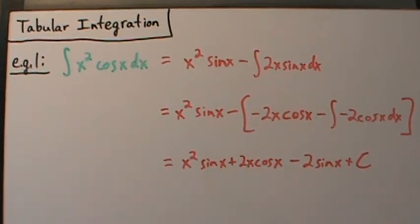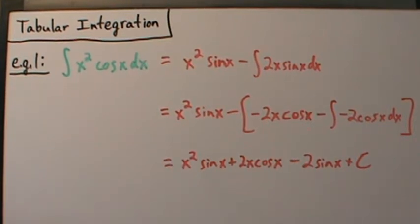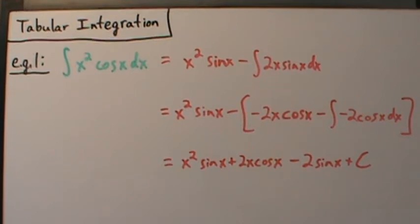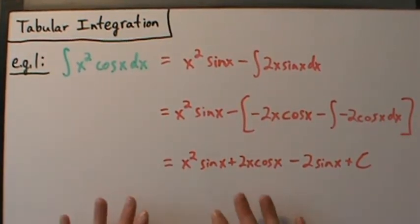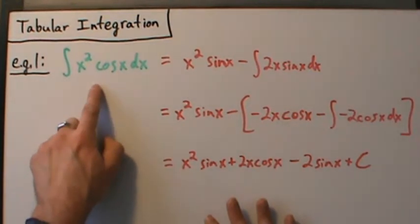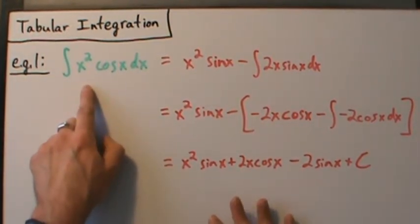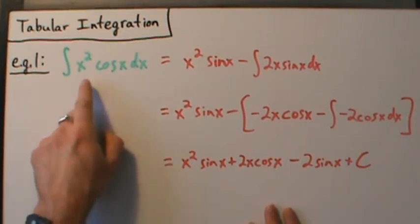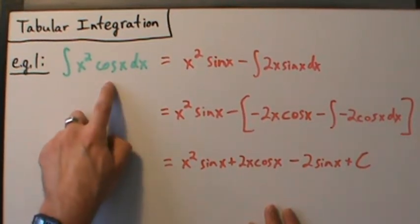Now we're going to talk about what's called tabular integration. Basically, it's really just integration by parts used repeatedly. Notice this is the same thing as example 4 for integration by parts, which we did in an earlier video. We had the integral of x squared cosine of x dx, and we did that with integration by parts.